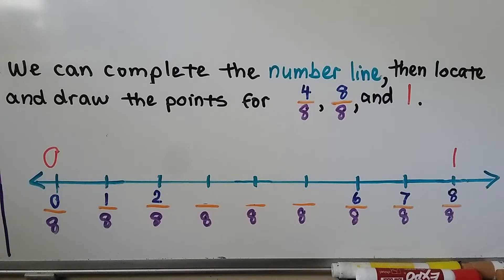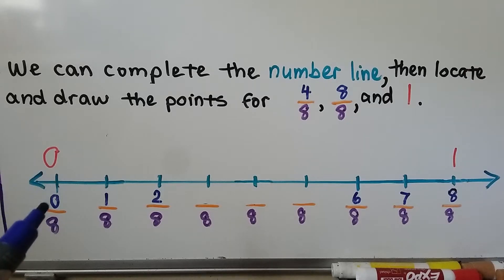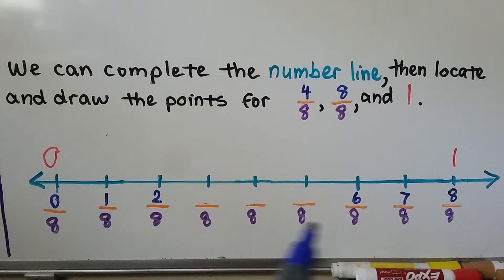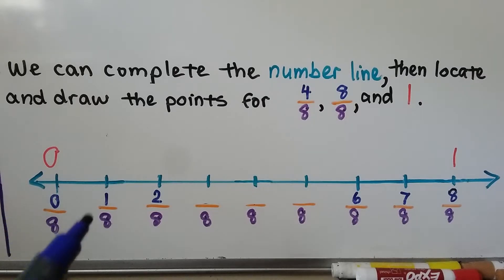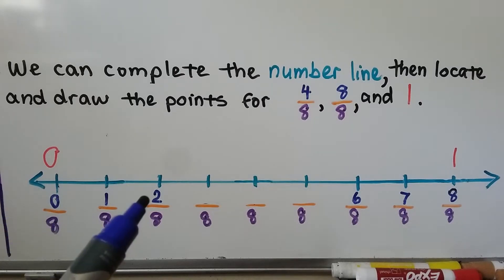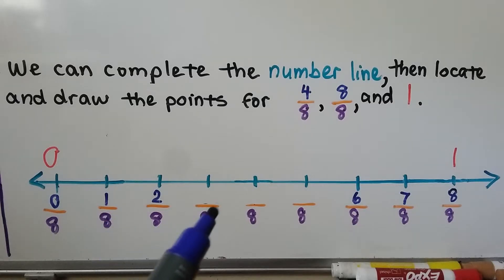We can complete the number line, then locate and draw the points for four-eighths, eight-eighths, and one. We look at the numbers on the bottom for the scale. Here's zero — that's zero-eighths. We can see it's in eighths because that's what the denominator is; it tells us it's split into eight equal parts. If we're at zero, we have zero-eighths — we don't have any. Here we're at one-eighth, two-eighths, and we need to fill in the rest.